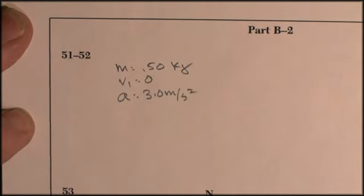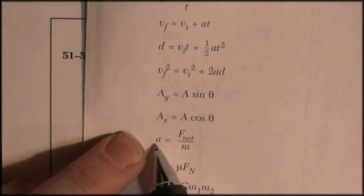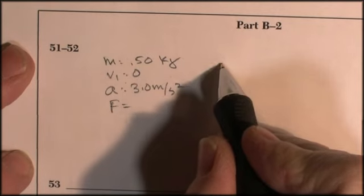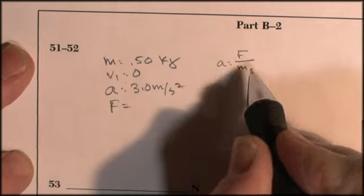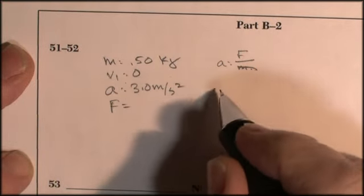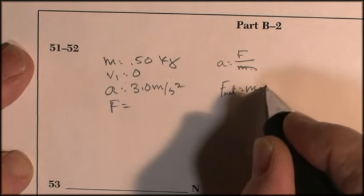And they're just looking for net force. And the equation on the formula sheet, acceleration is net force divided by mass. Acceleration is net force divided by mass. So I'll multiply both sides by M to get rid of divided by M. And net force is equal to mass times acceleration.